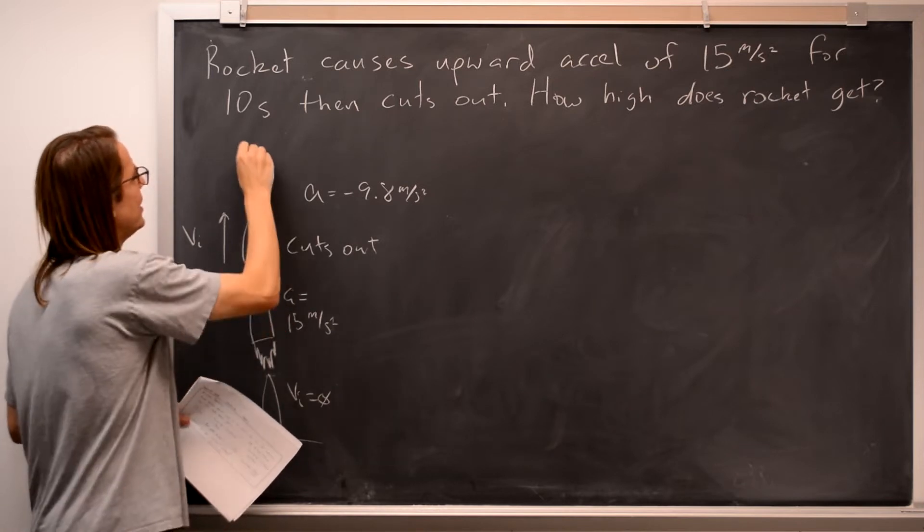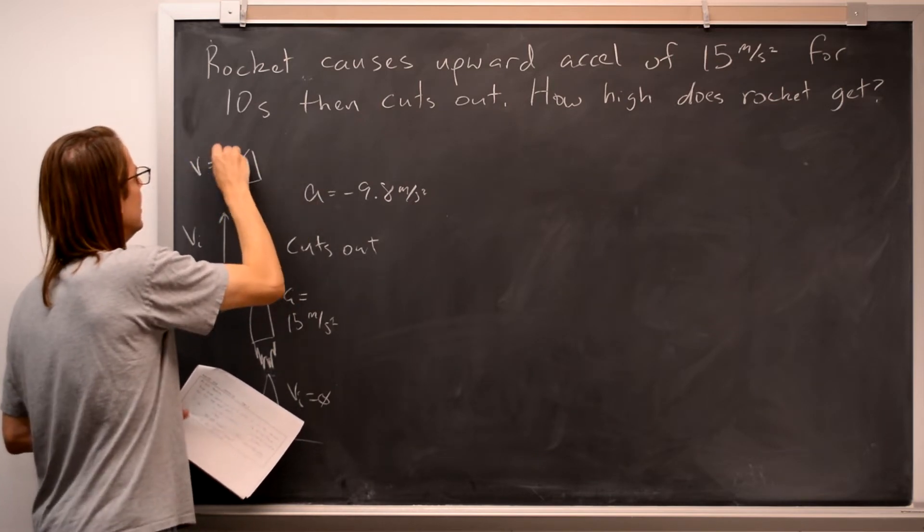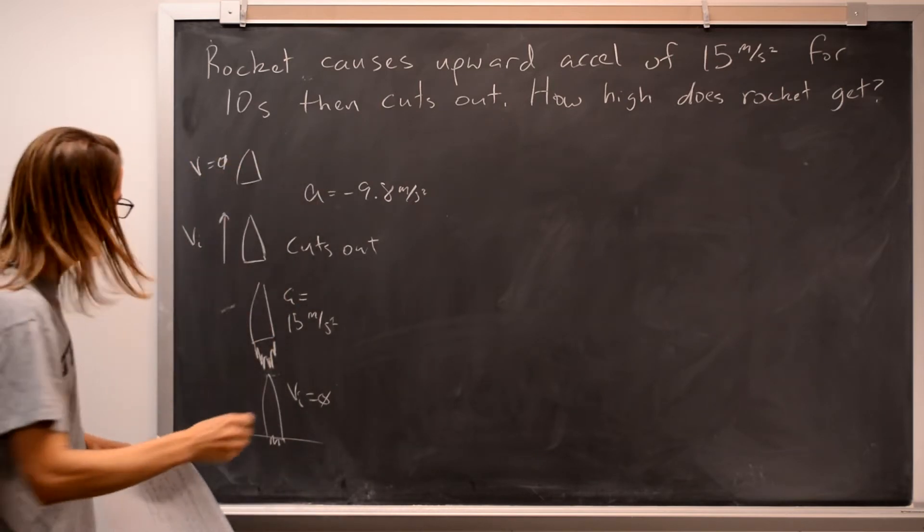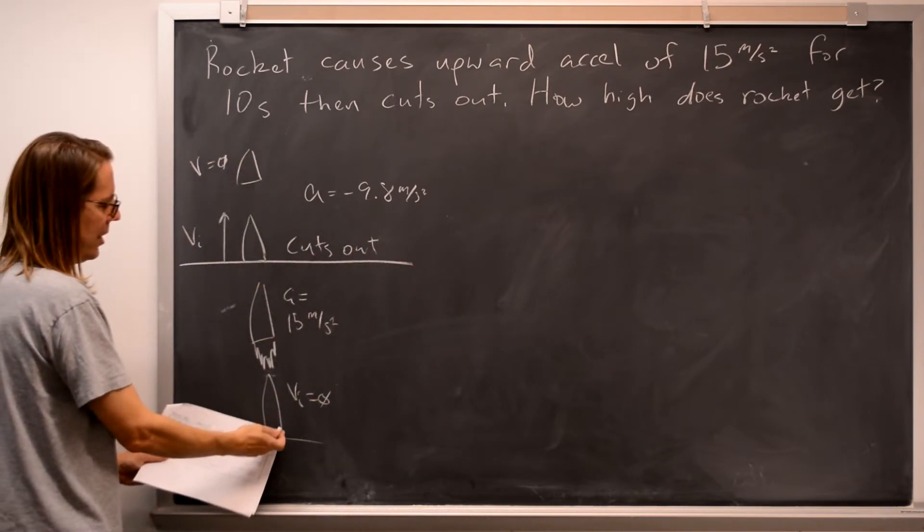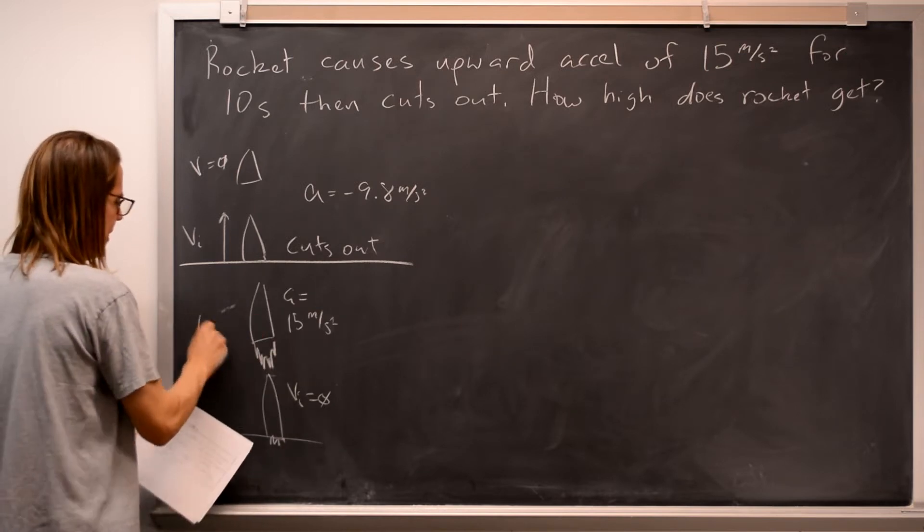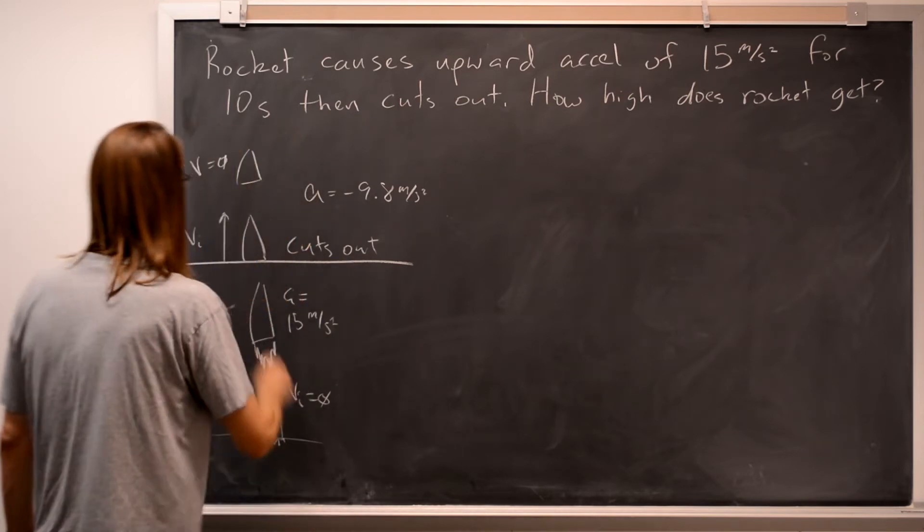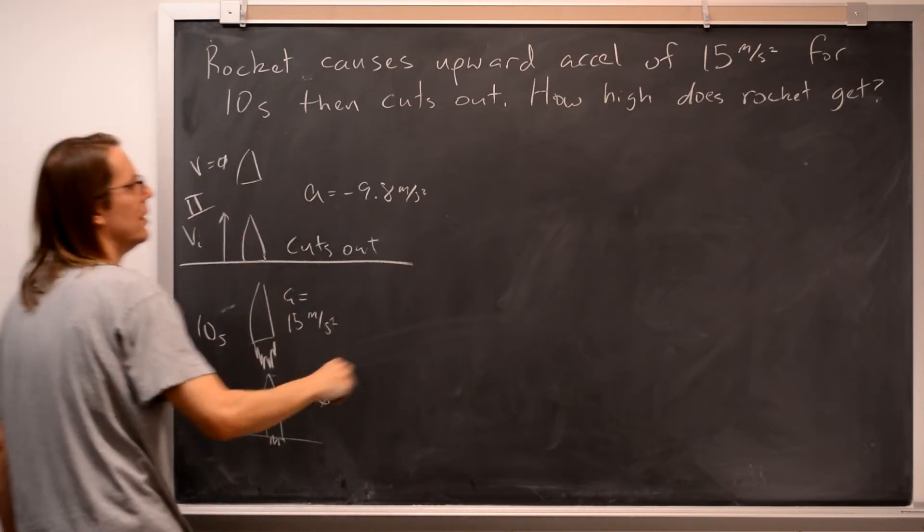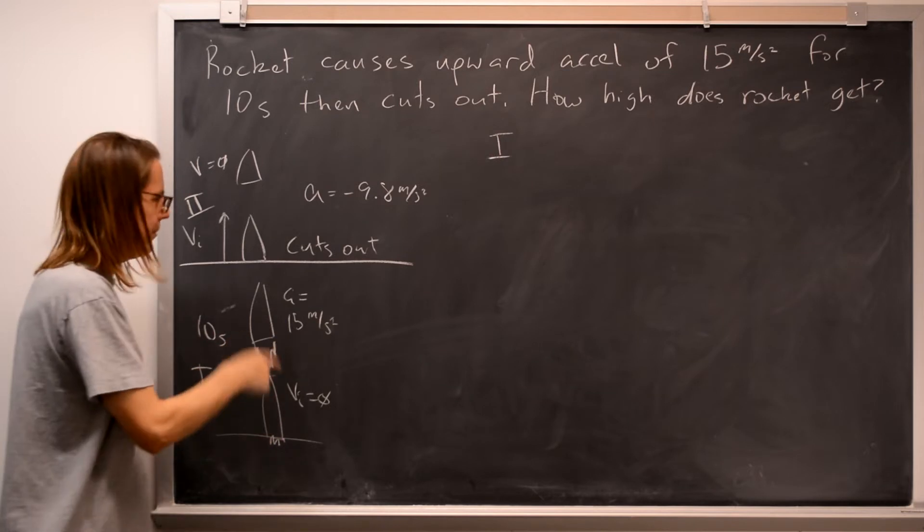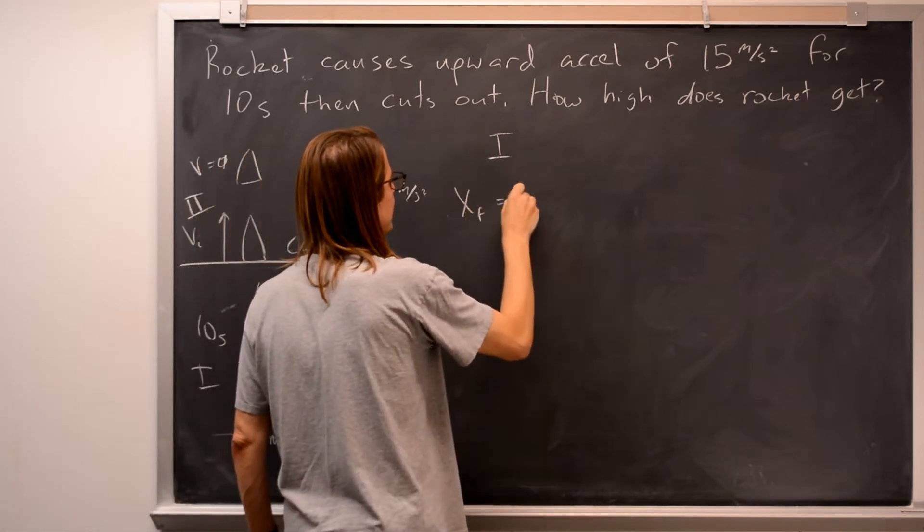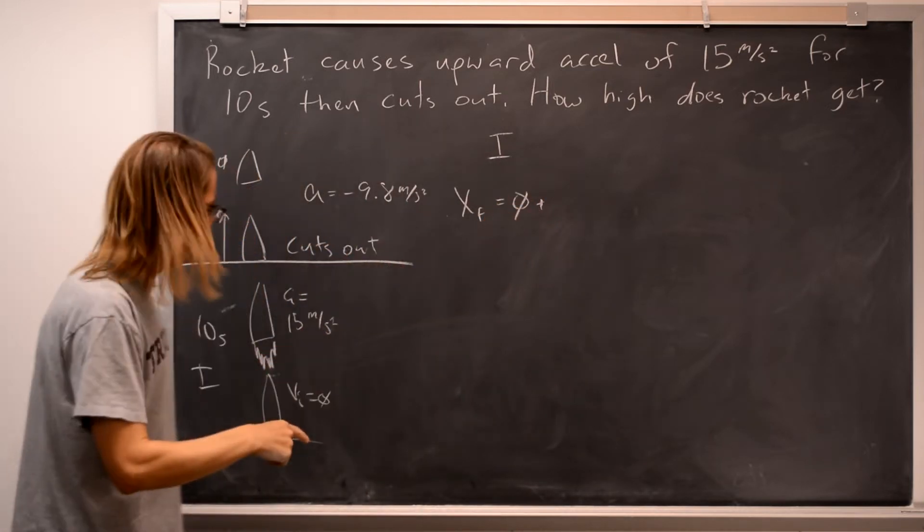So really the two regions, and then it sort of goes up until its velocity goes to 0, and it hits the top where V equals 0. So the two ranges you're going to deal with are these two. So here is the powered flight, 15 meters per second squared for 10 seconds, and then however high it goes after that. All right, so let's call them 1 and 2. So let's do 1 first. All right. So 1 is straightforward kinematics. You have an acceleration for a time.